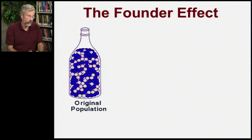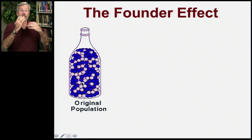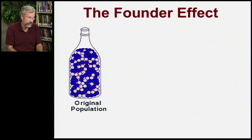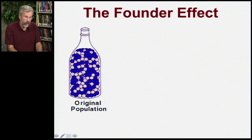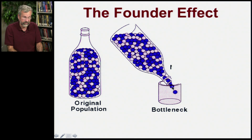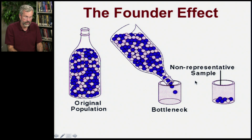Here we have our original population — the gene pool, with all those capital A and little a alleles, represented as different colored marbles in a bottle. There are a large number of marbles, but we're then going to pass them through a bottleneck and only allow a few of those marbles out.